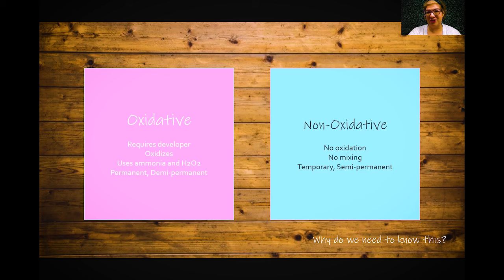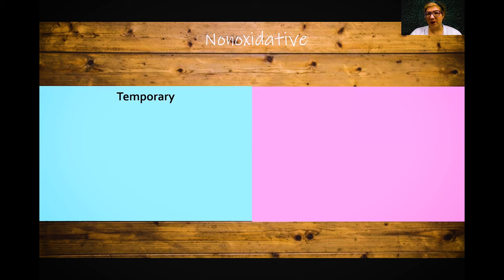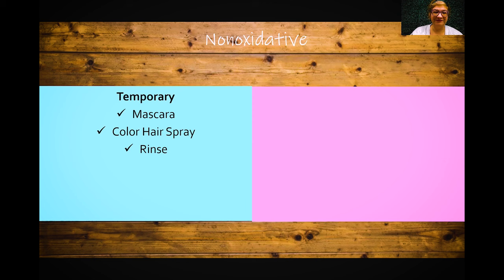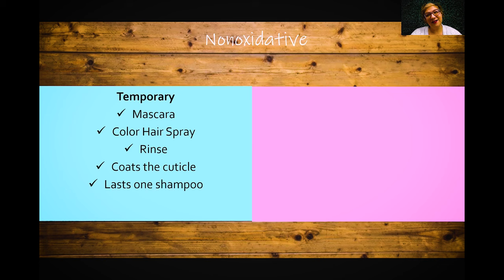Non-oxidative color involves no oxidation — it doesn't change color in the bowl; what you see is what you get. There is no mixing. This is your temporary or semi-permanent colors. Temporary color includes mascara — that coats the hair shaft — colored hairspray, and rinses. It coats the cuticle and lasts one shampoo. If the hair is super porous from over-bleaching, it might actually last more than one shampoo, so be cautious.